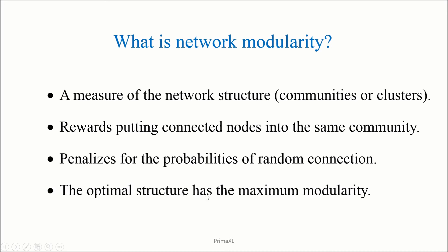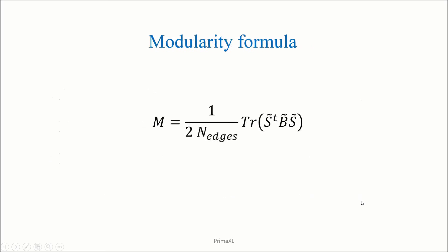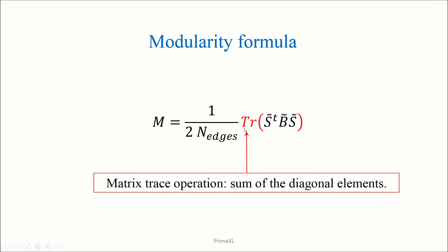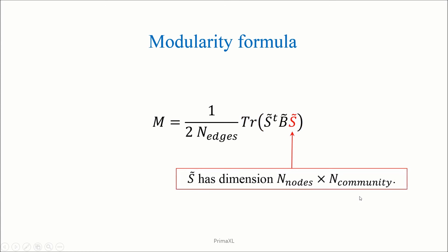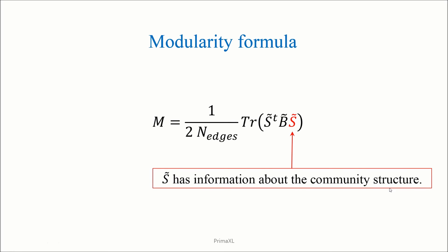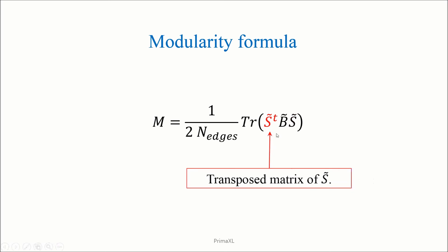The optimal community structure corresponds to the maximum modularity. The modularity can be expressed by a formula where S-tilde and B-tilde are matrices. At first look, this formula is rather hard to understand, so we'll try to make sense of it bit by bit. This part means taking the trace of the matrix within the parenthesis — the trace is the sum of the diagonal elements. The matrix S has as many rows as the number of nodes and as many columns as the total number of communities. It contains information about the community structure. The matrix S to the power t is the transposed matrix of S.